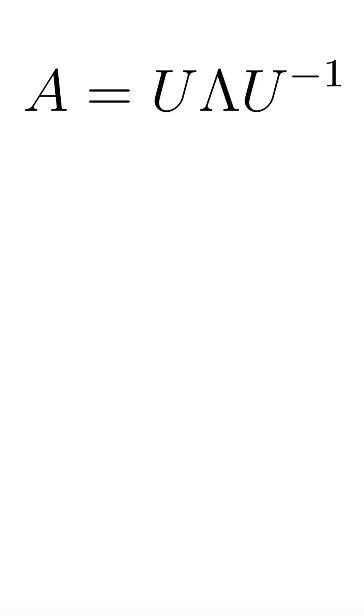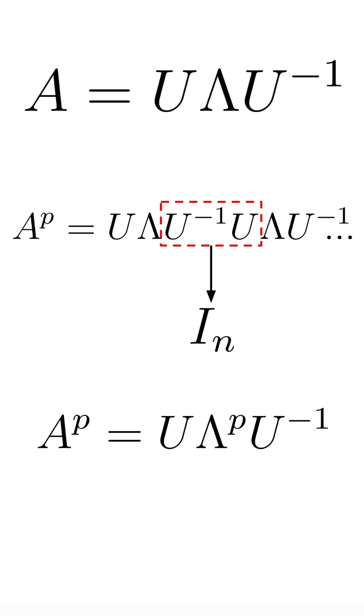However, the fastest way of raising a square matrix to the power of p is to replace A with its eigendecomposition, and if we do that, then each inverse U multiplied by U becomes the identity matrix. So, what we end up with is U multiplied by the matrix lambda to the power of p multiplied by U inverse.